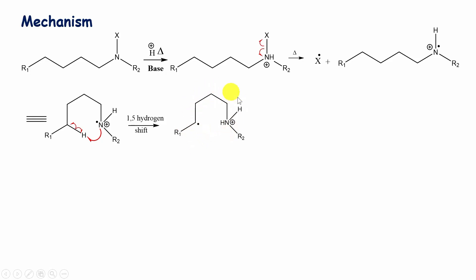And hence, this radical cation is formed by 1,5 hydrogen shift. Then, this radical cation reacts with this halogen radical. Thereby, halogen is abstracted by this carbon radical, forming this halogenated ammonium cation.